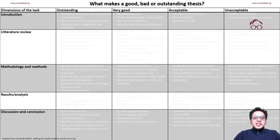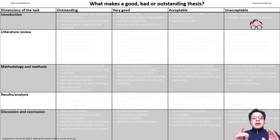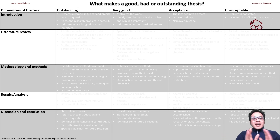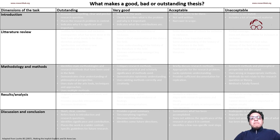Considering these five categories, we are going to look into the characteristics of an unacceptable, acceptable, very good, and outstanding thesis. These points are not my own — they are taken from a book called 'Making the Implicit Explicit.' Maybe in 20 years I will make my own points, but for now these are mainly based on that book.